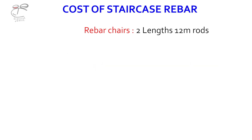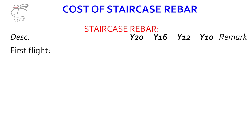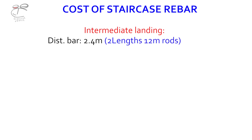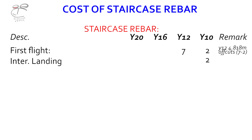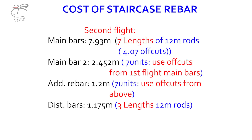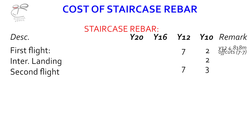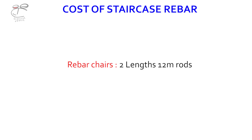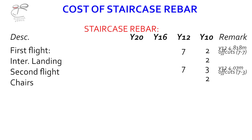Now we collate the totals. First flight main bars: about seven lengths of iron — we specify that on the list. Distribution bars (Y10): two lengths. We have off cuts noted from above. For the intermediate landing: about two lengths of Y10, or whichever type of rebar is being used. Second flight main bars: seven lengths of 12-meter rods — we specify seven on the list. Distribution bars: about three lengths. For the rebar chairs: roughly two lengths of 12-meter iron — we specify that as well.